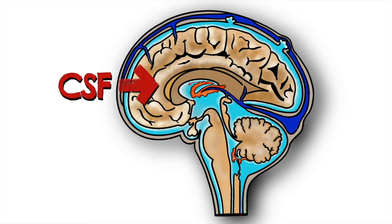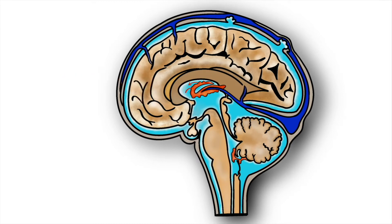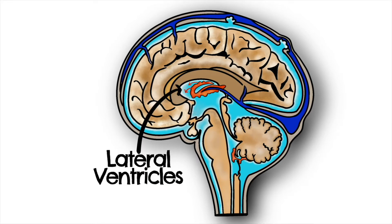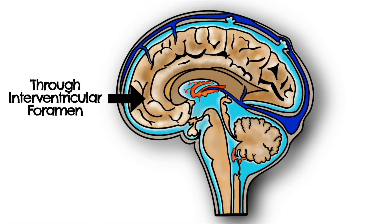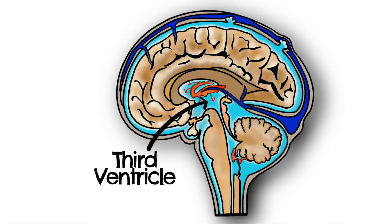Now we have covered what CSF is, we can move on to covering how it flows throughout the brain. To begin with, CSF is secreted from the choroid plexuses located in the lateral ventricles of the brain. You can often see remnants of these choroid plexus within the lateral ventricles on dissection. From the lateral ventricles, the CSF flows through the intraventricular foramina, also known as the foramina of Monroe, into the third ventricle.